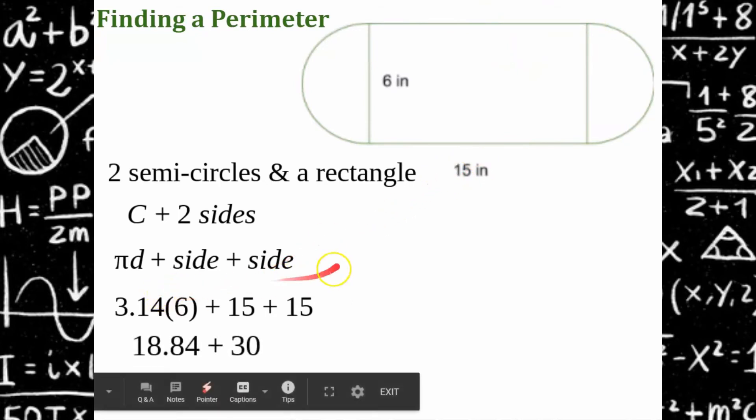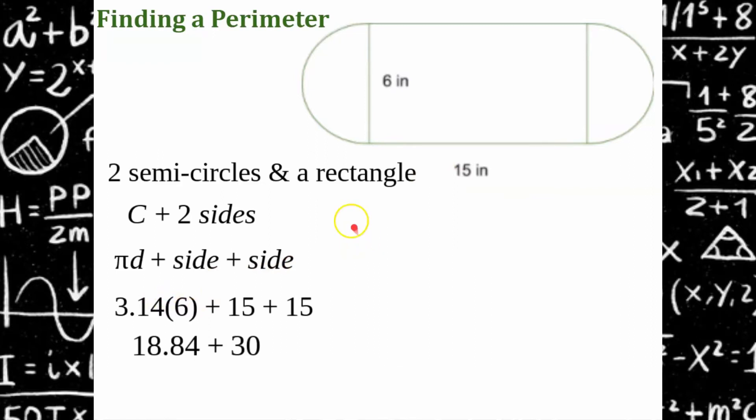Multiply. 3.14 times 6 and then 15 plus 15 is 30. And we get that the perimeter all the way around this composite figure is 48.84 inches.